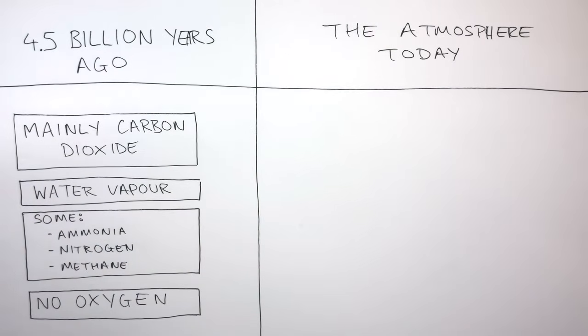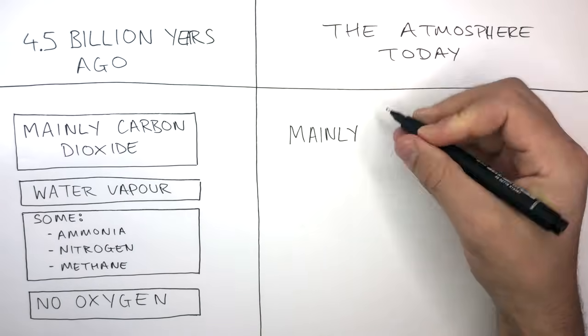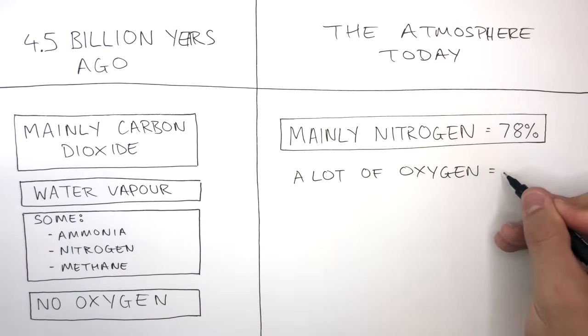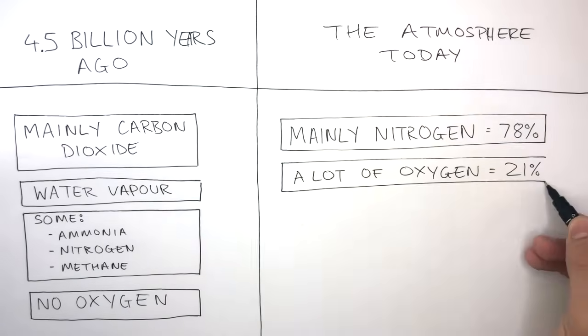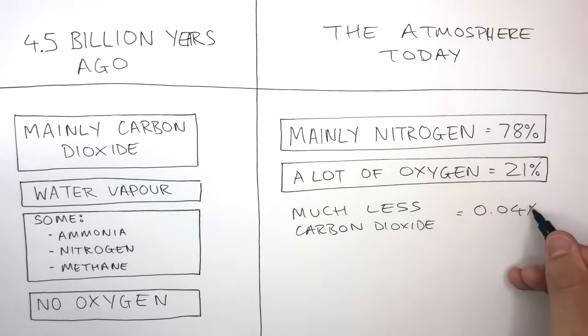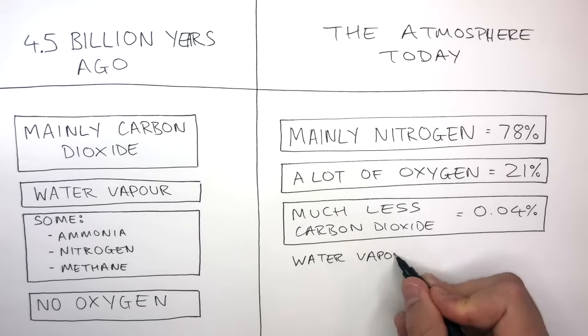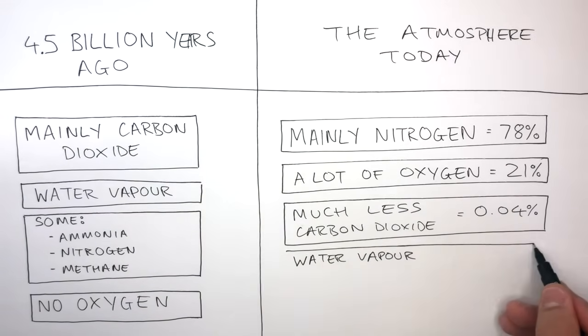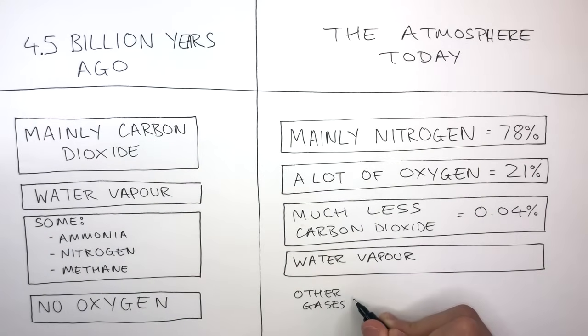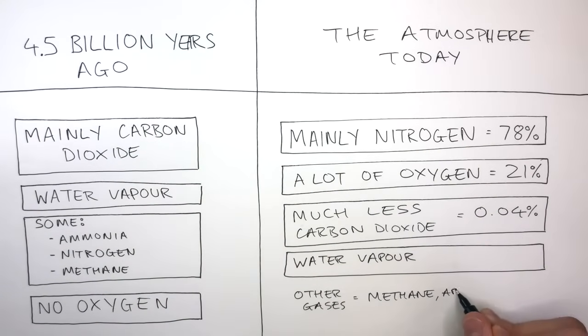The atmosphere today consists of mainly nitrogen at 78%, a lot of oxygen at 21%, much less carbon dioxide at 0.04%, water vapour but much less due to the formation of oceans, and then other gases such as methane and argon.